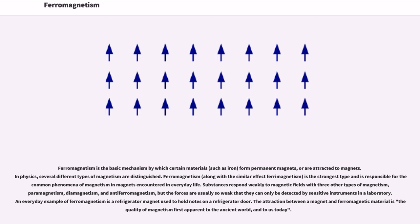Ferromagnetism. Ferromagnetism is the basic mechanism by which certain materials, such as iron, form permanent magnets or are attracted to magnets. In physics, several different types of magnetism are distinguished. Ferromagnetism, along with a similar effect ferrimagnetism, is the strongest type and is responsible for the common phenomena of magnetism in magnets encountered in everyday life.